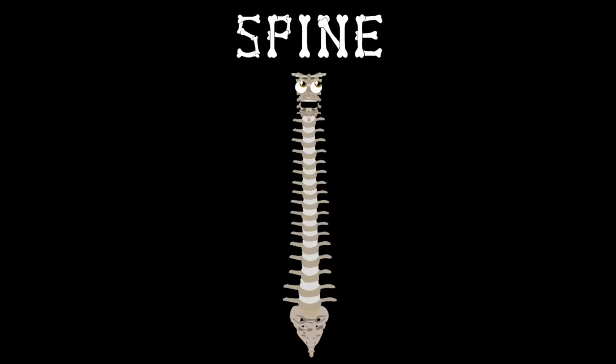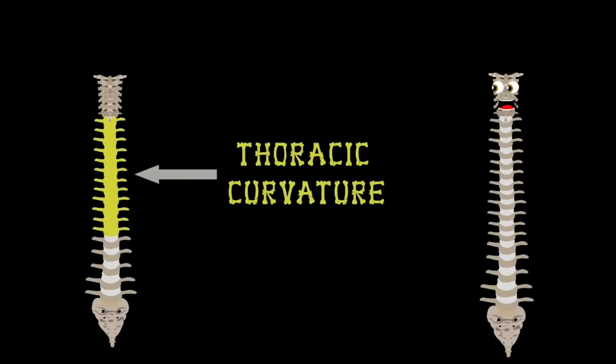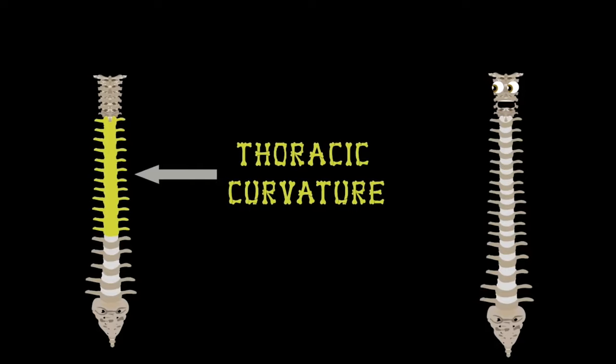The next group of your spine we will be looking at is the thoracic curvature with 12 vertebrae intact. Each vertebrae we see begins with the letter T. The T stands for thoracic, let's take a look and see.